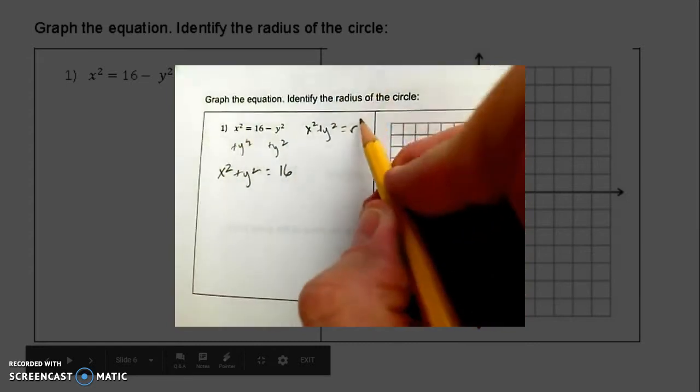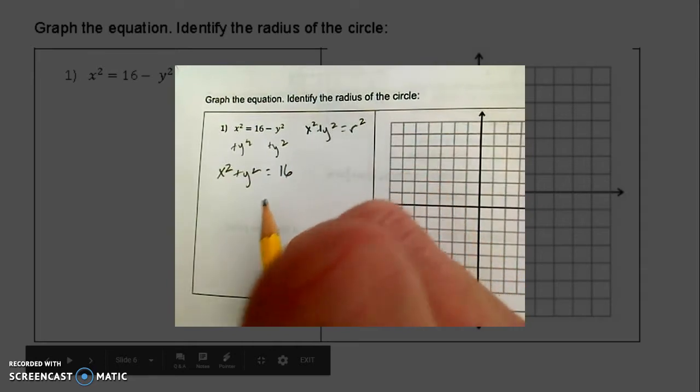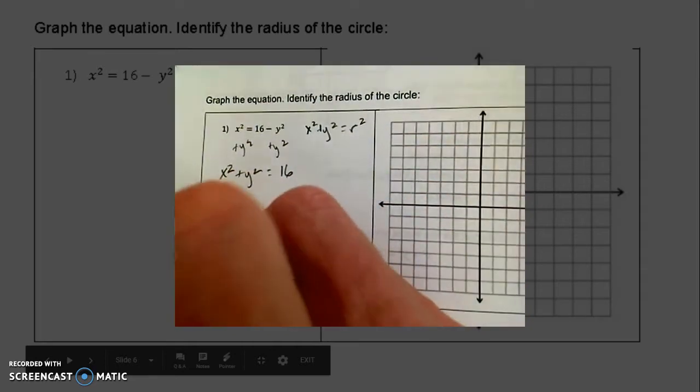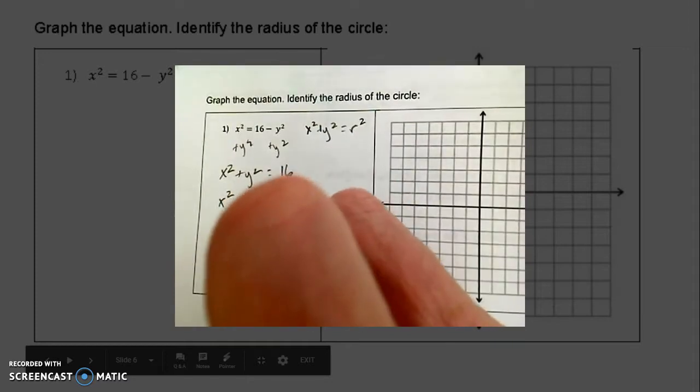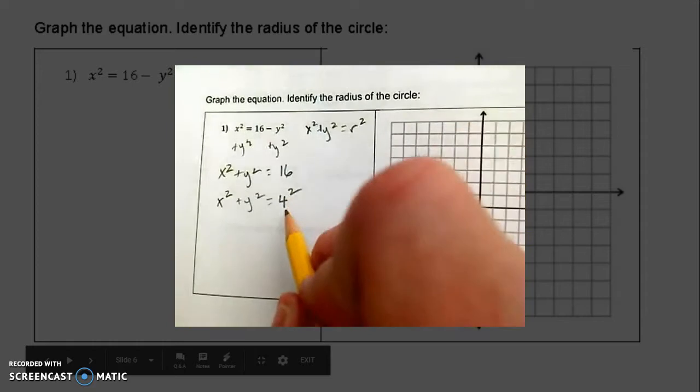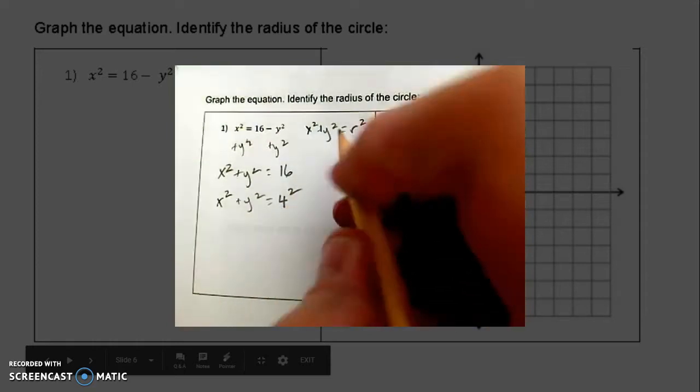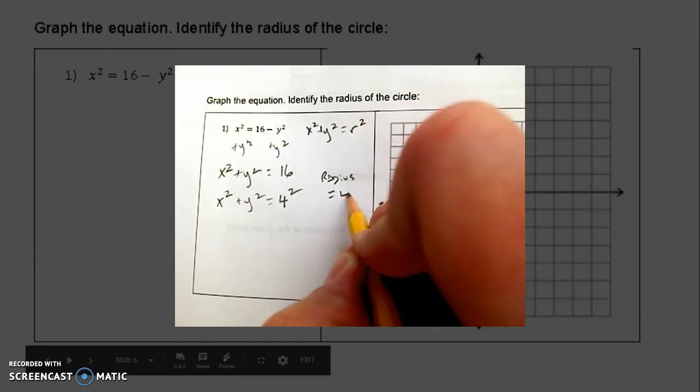Remember that I want this to be r². I need to express this number as something to the second power. This is relatively simple. You recognize 16 by now as a perfect square. So 4 is r, so the radius equals 4.